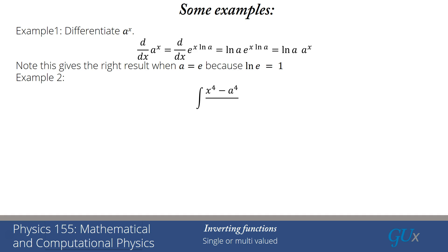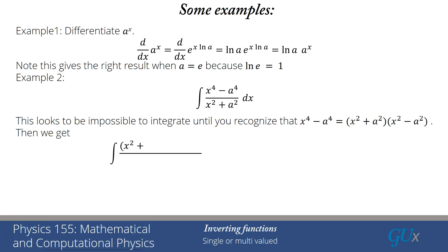Example number 2. Let's say I had to integrate x to the 4th minus a to the 4th over x squared plus a squared dx. Well, at first, by looking at that, it looks like that's an impossible integral to integrate. It's so complicated. How could I possibly do it? But if I recognize and think about my factoring, x to the 4th minus a to the 4th is x squared plus a squared multiplied by x squared minus a squared, you see I can cancel those two factors of x squared plus a squared in the numerator and denominator.